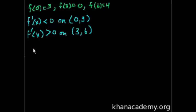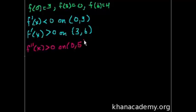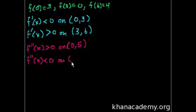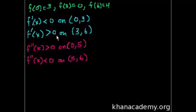What do they tell us about the second derivative? They tell us that the second derivative is greater than 0 on the open interval from 0 to 5 - so it's concave upwards there. And they also tell us that the second derivative is less than 0, so it's concave downwards, on the open interval from 5 to 6. They don't give us any information about what happens after 6, so maybe we'll just assume that it doesn't change.